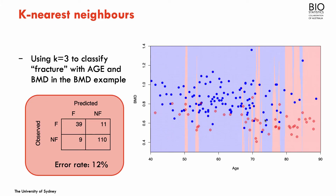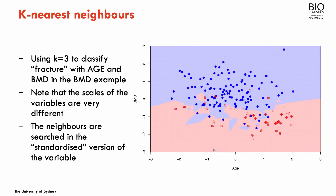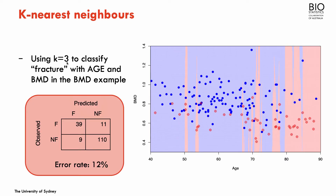Using the bone mineral density dataset, if we try to classify fracture according to age and BMD variables using k equals 3 — the three closest neighbors — this would be the classification area. It might look a bit strange, but don't forget that age and BMD are in different scales. So if I'm going to look at distances to find the neighbors, I have to standardize these two variables so they are in the same scale. The KNN with three neighbors in this case gives an error rate of 12%, with 20 misclassified fractures out of 169.